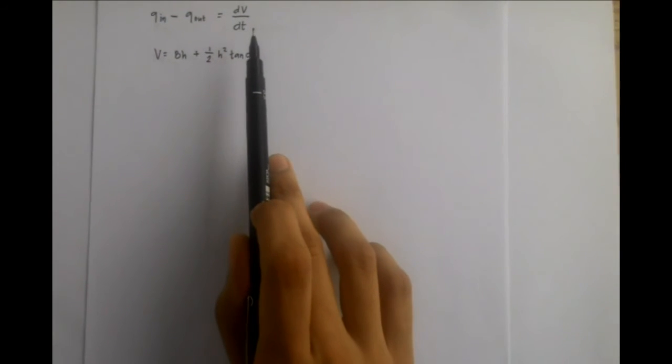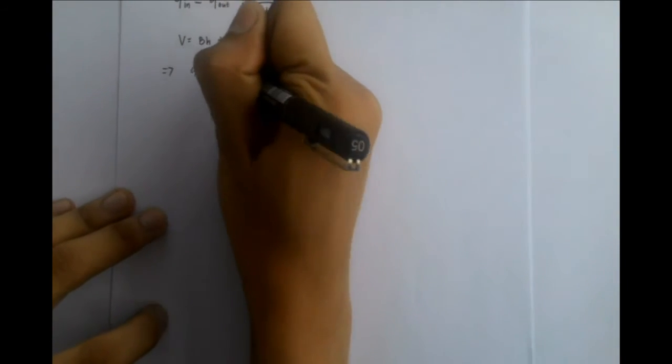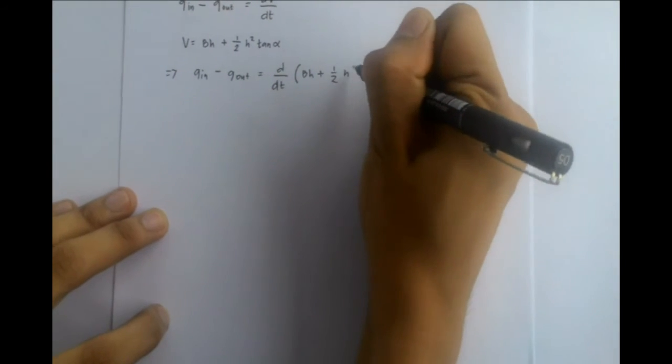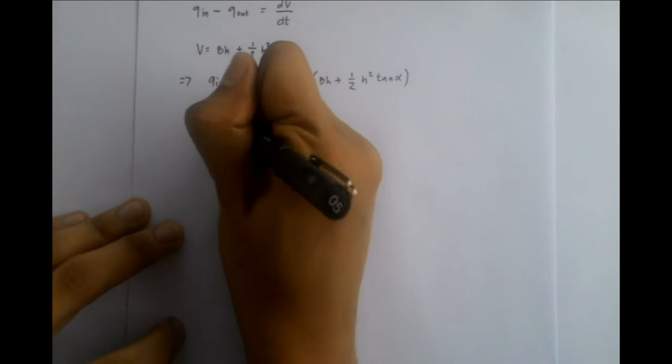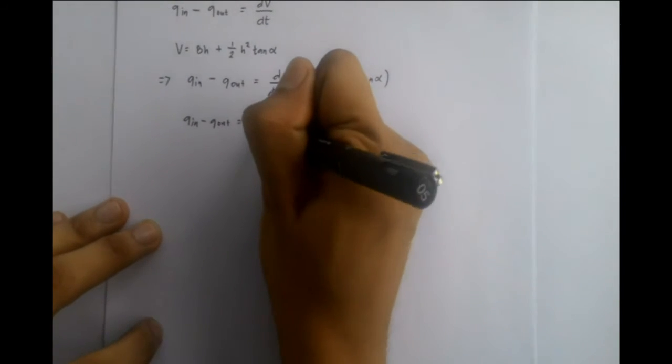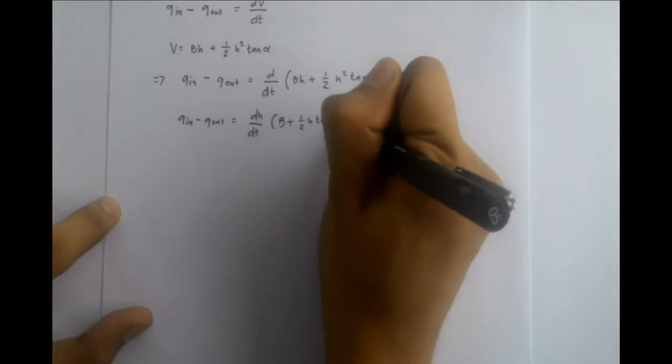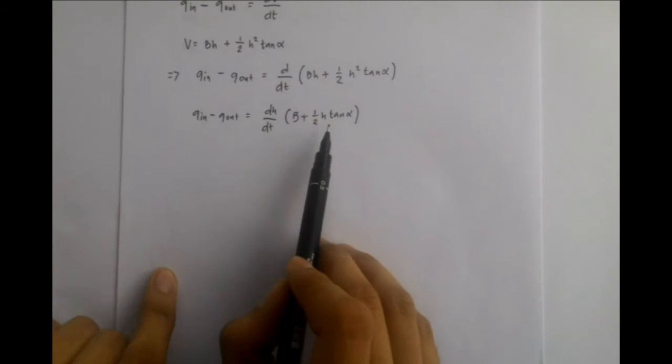Now, looking back at the equation earlier, this is the mass balance and this is the equation for volume. We will substitute this equation of volume to the mass balance equation to get Q_in minus Q_out equals d/dt times BH plus one-half H squared tangent alpha. As you notice, even though that we factored out the H in this term, the second part of this term still contains H.